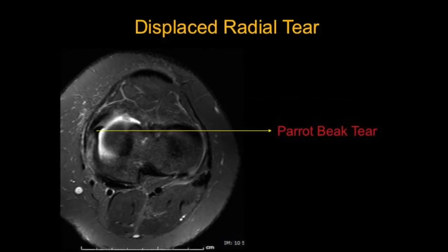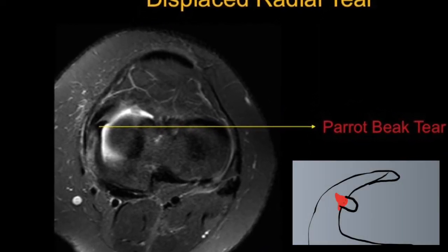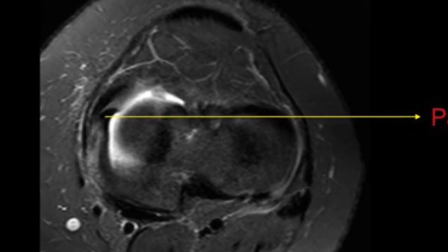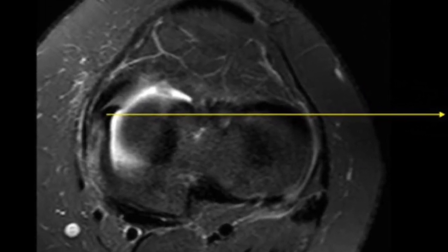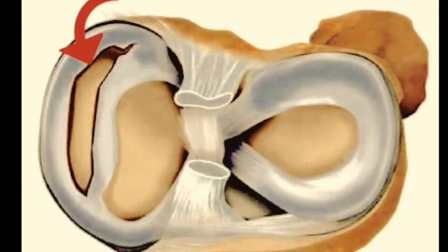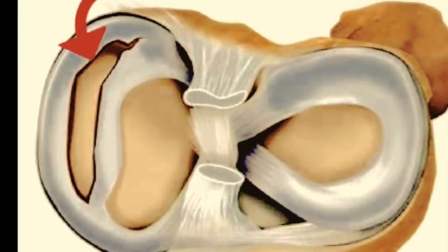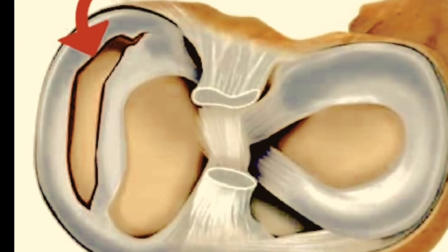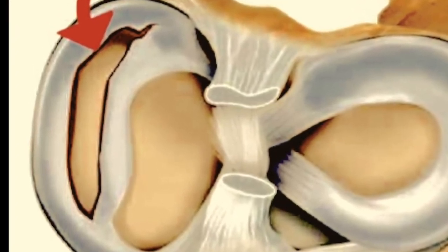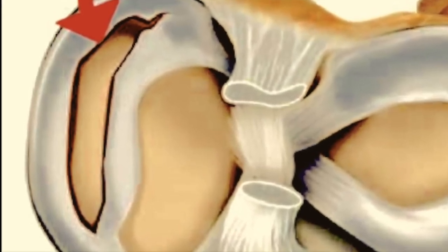Displaced tears form a completely different category where part of the meniscus is displaced and lies somewhere within the knee joint. Bucket handle tears are commonly associated with ACL injuries and mostly common in the medial meniscus. They are displaced longitudinal tears — the central fragment resembles the handle of a bucket, and the large peripheral part is the bucket itself.